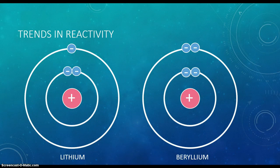The trend in reactivity for group 2 metals is similar to that of group 1 for the same reason. However, it is more difficult to remove the second valence electron than the first.